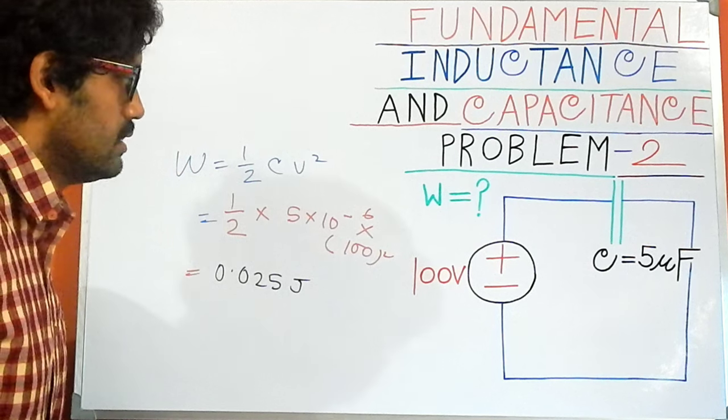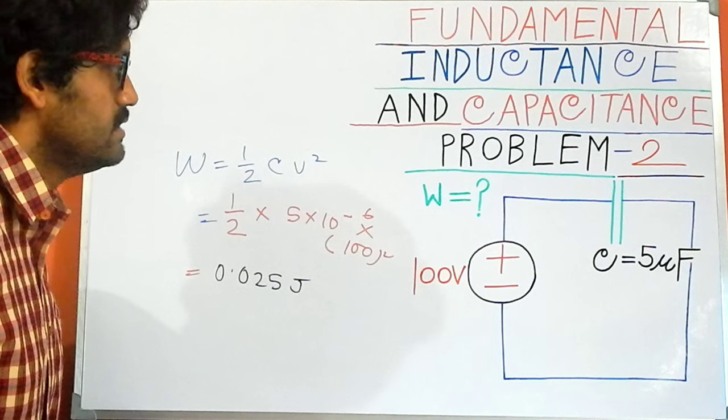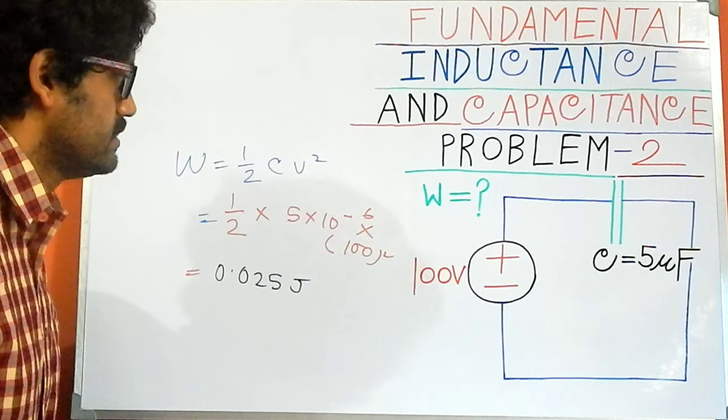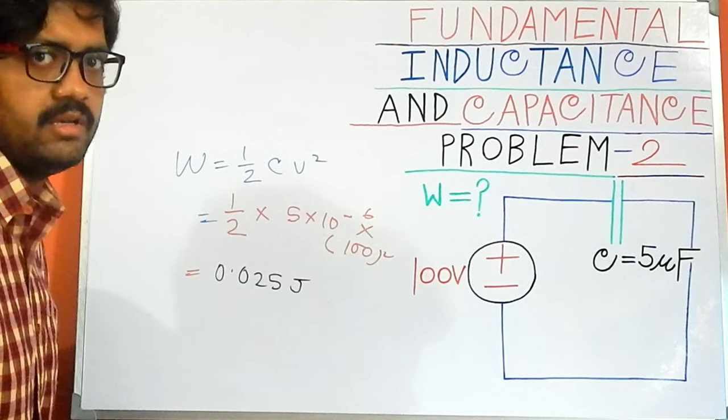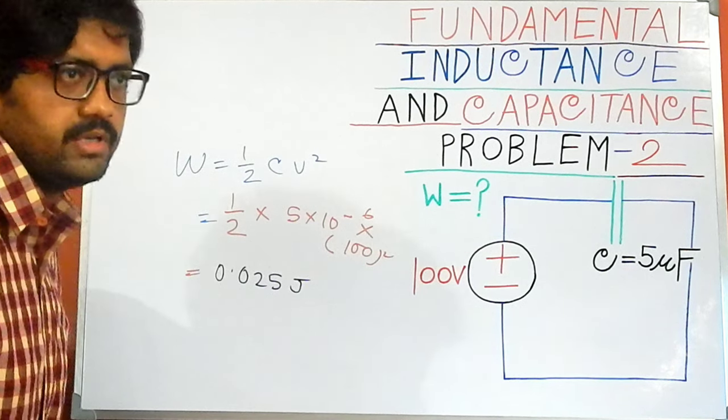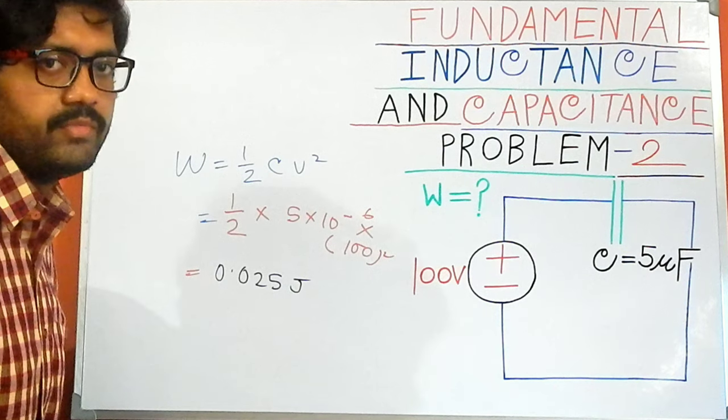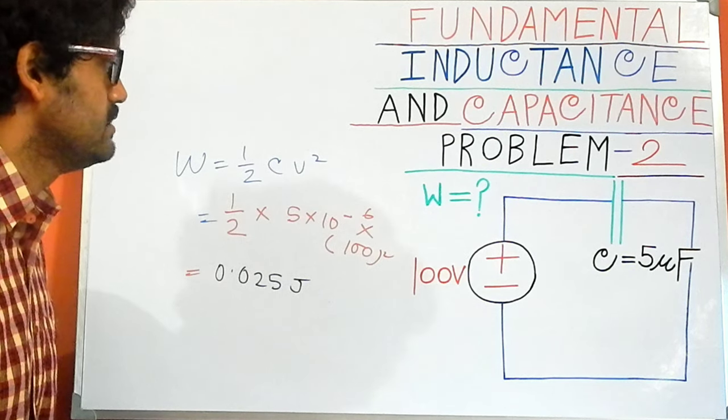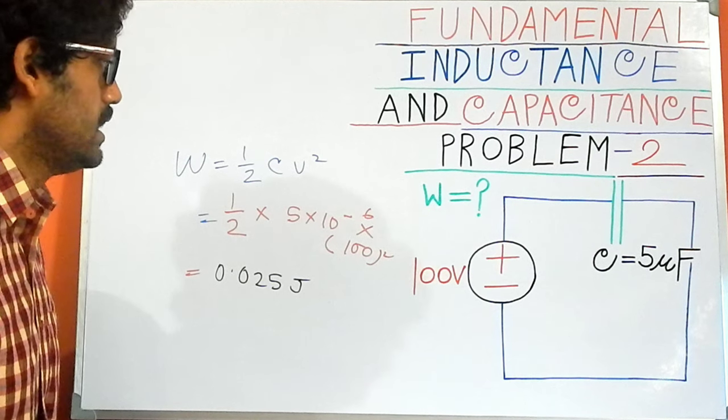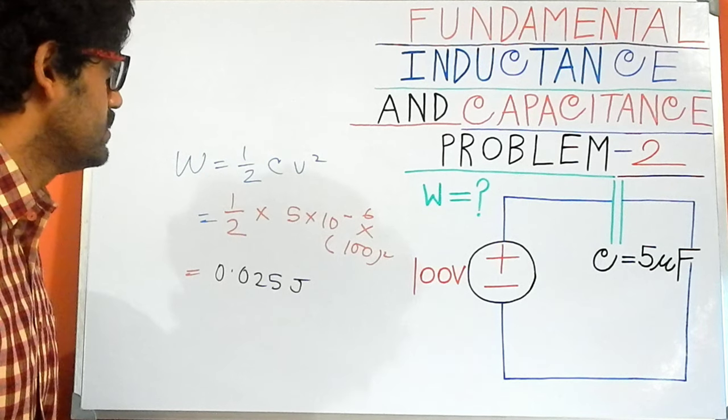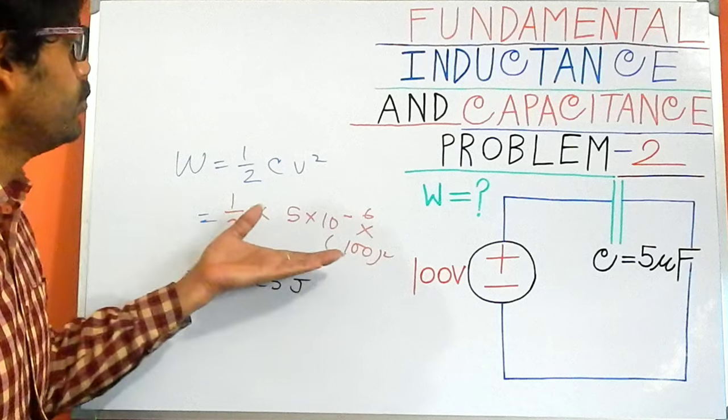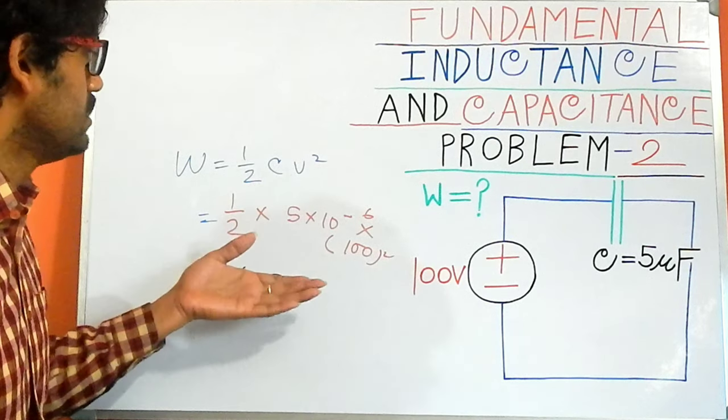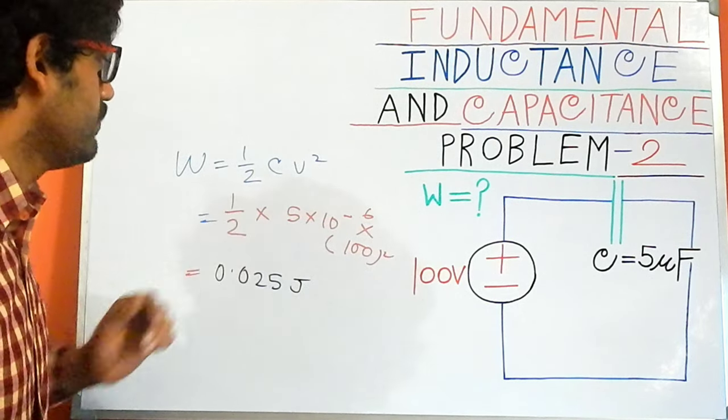I have applied the simple formulation which is half CV squared, and this is our formula for the energy across our capacitor. I have established that in my previous videos. If you have lost touch with my videos, please follow those videos also. I have just put those values: the capacitor is 5 times 10 to the power minus 6 and the voltage is 100 squared. This is our final answer.